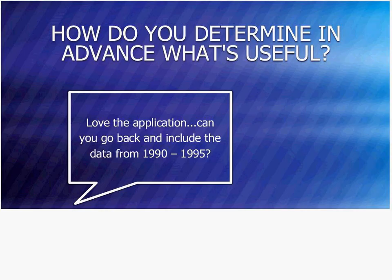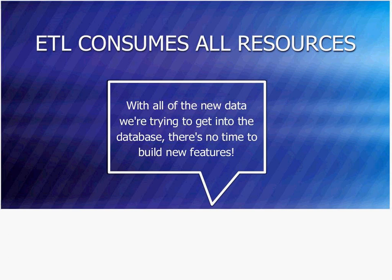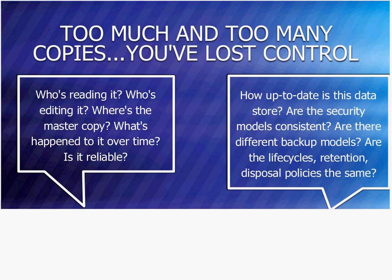Some of the questions we'd ask: how do you determine in advance what's useful? Can you go back and include data from 1990 to 1995? Do you need to be copying data for every new application? ETL consumes all resources — anytime a new data type or source comes in, you have to either add a new ETL pipe or modify the existing one. Too many technologies: in heterogeneous environments it's very challenging to come up with a standard reference architecture. Too many old copies — we've lost control and don't know where the master data records are.